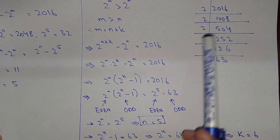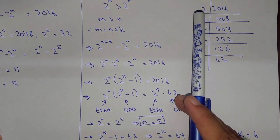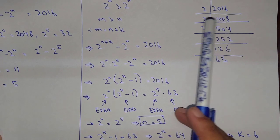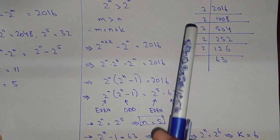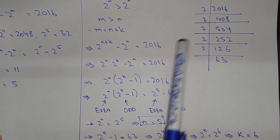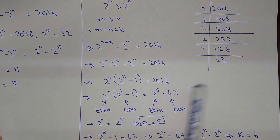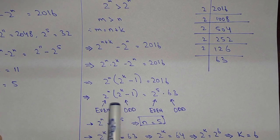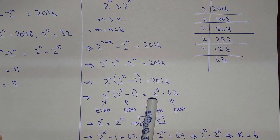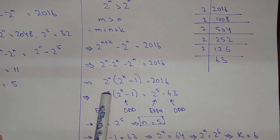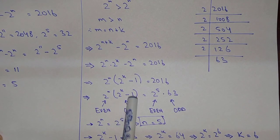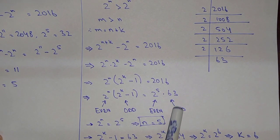Now we find the factors of 2016. 2016 equals 2 times 1008, then 2 again, and so on, leaving a remainder of 63. So we can write 2016 as 2 power 5 multiplied by 63. We can see that 2 power 5 is an even number, and 2 raised to any power is always even.